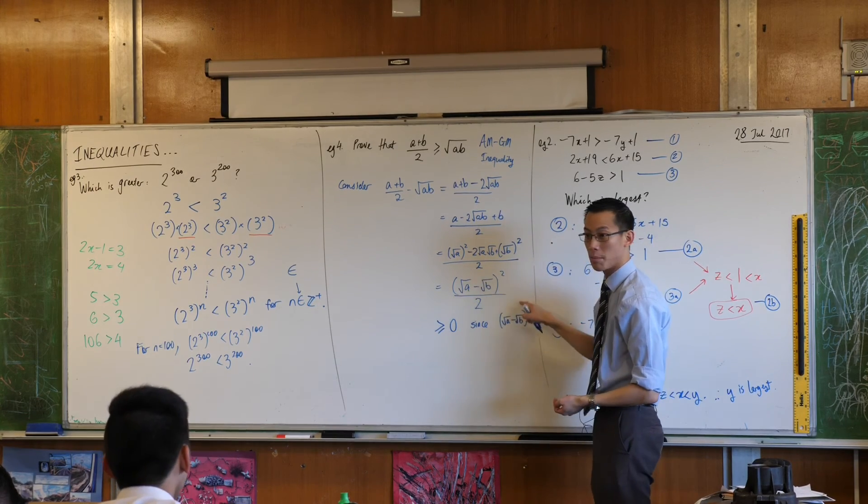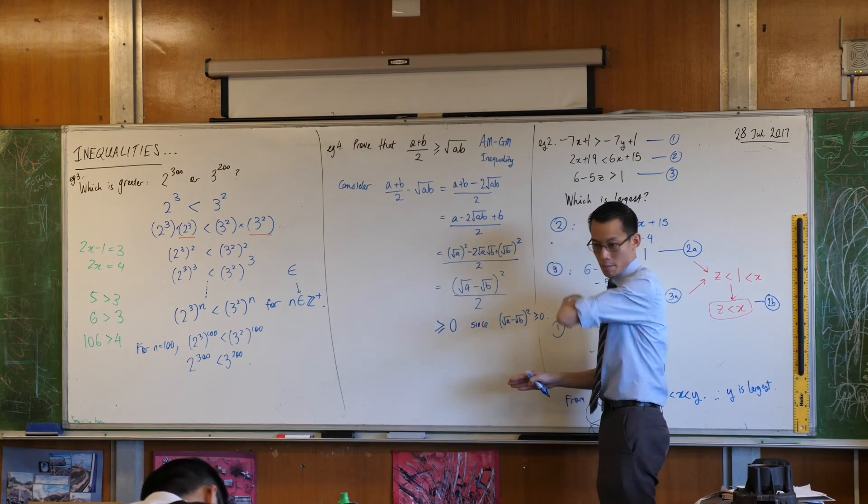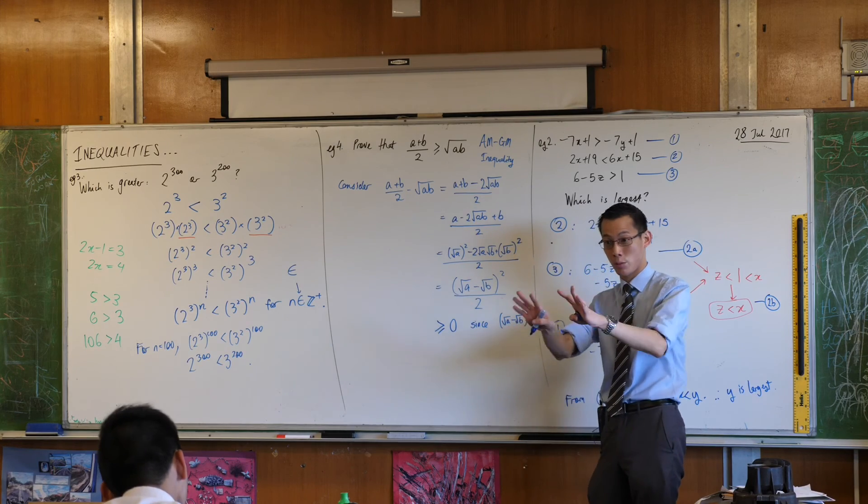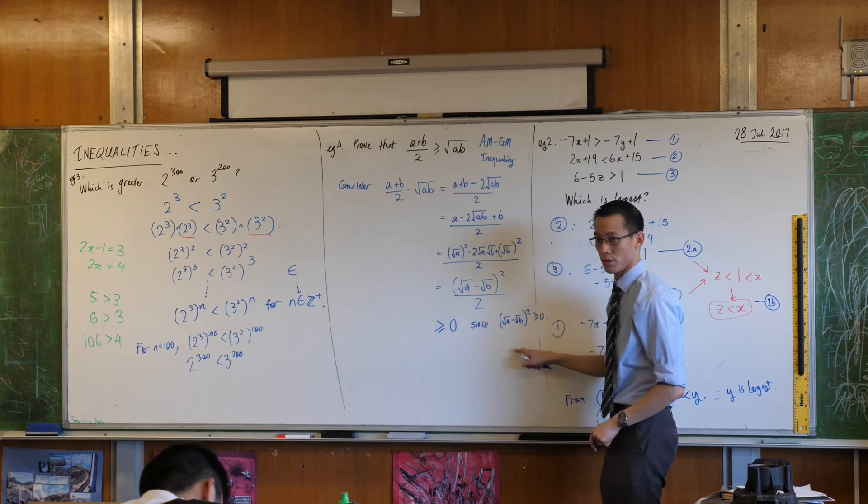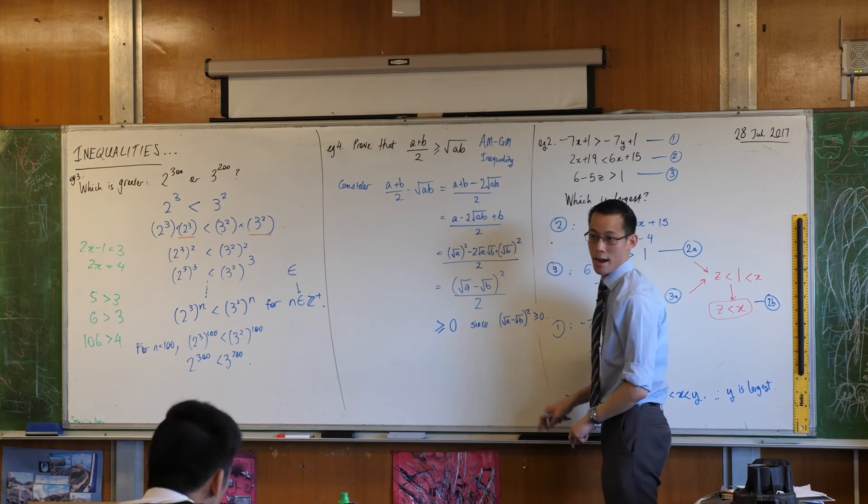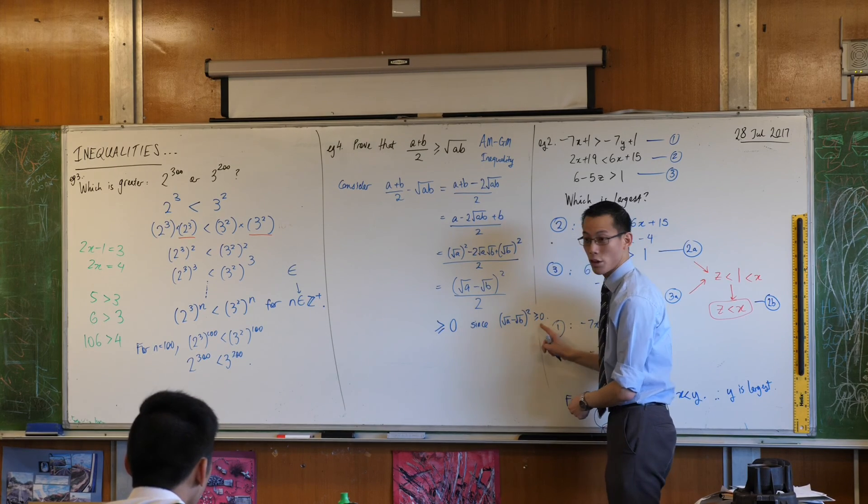No matter what number you put in for a and b, so long as the numbers we've been dealing with all along, √5 minus √2, √100 minus √π, whatever you like, you square it, you'll get something that obeys this law.